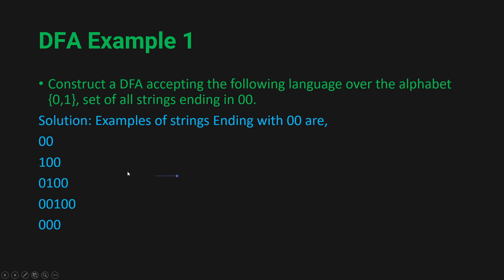Let's begin constructing the DFA. Our starting state is state A. In state A, if we get a 0, we go to state B. In state B, if we get a 0, we go to state C. We make state C our final state. So this is our basic structure: states A, B, and C — if we get two consecutive zeros, we reach final state C.